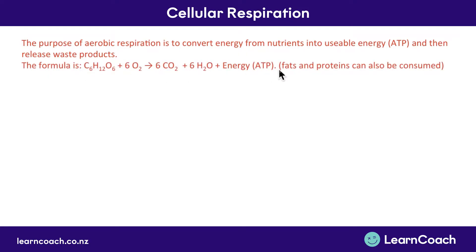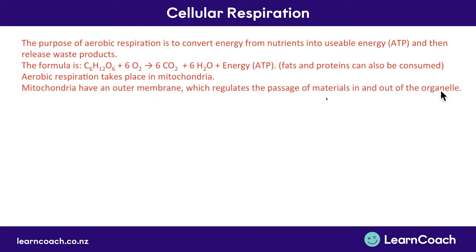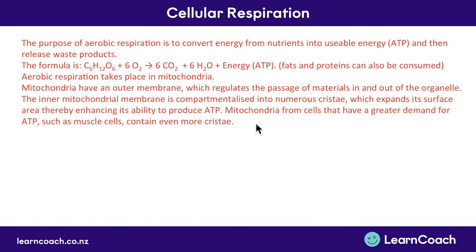The purpose of aerobic respiration is to convert energy from food and nutrients into usable energy for cells, releasing waste products as well. The formula shows this, and knowing there are 28 to 38 ATP created each time is good. Fats can also be consumed in the process. This takes place in the mitochondria, which have an outer membrane regulating the passage of materials, and an inner membrane compartmentalized into folds called cristae. More cristae means more surface area, so you can make more ATP. Mitochondria from cells with high ATP demand, such as muscles, contain even more cristae.